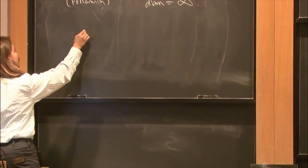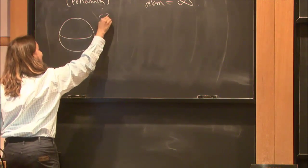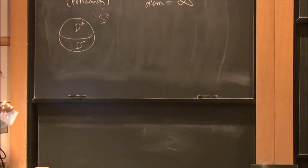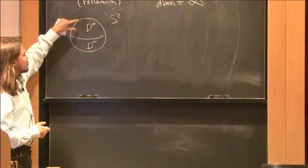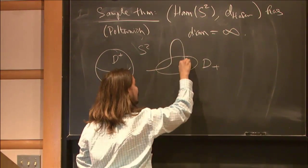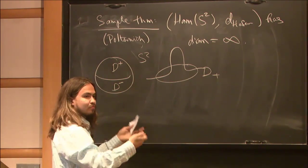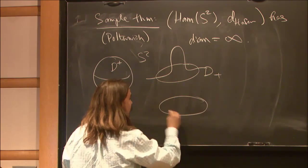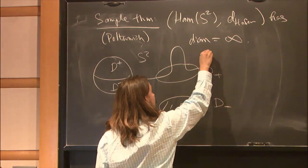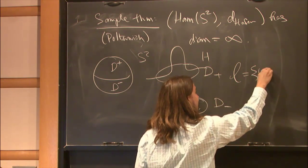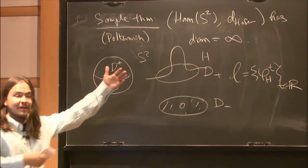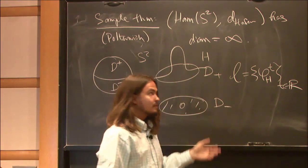I actually do want to do this because there is a follow-up question. Write S2 as an upper hemisphere union lower hemisphere. On the upper hemisphere, consider this Hamiltonian, just positive with non-zero integral. And on the lower one, consider just zero. This gives us a function such that L, which is the flow of this autonomous function, is a quasi-geodesic. In particular, it goes to infinity.